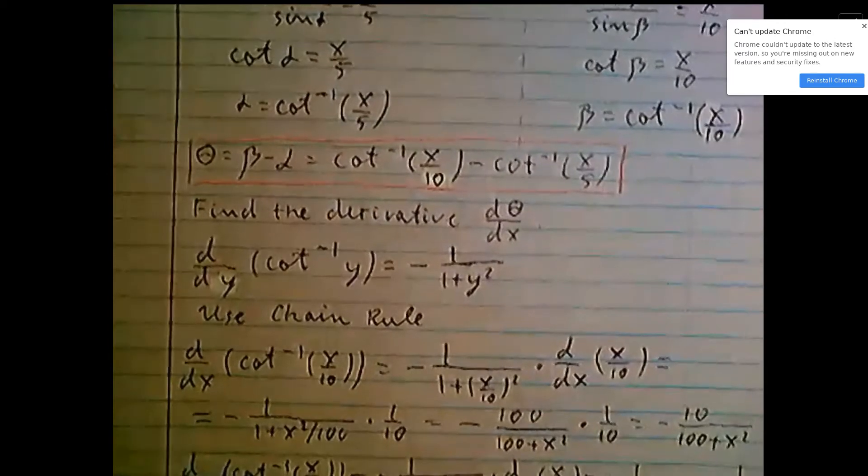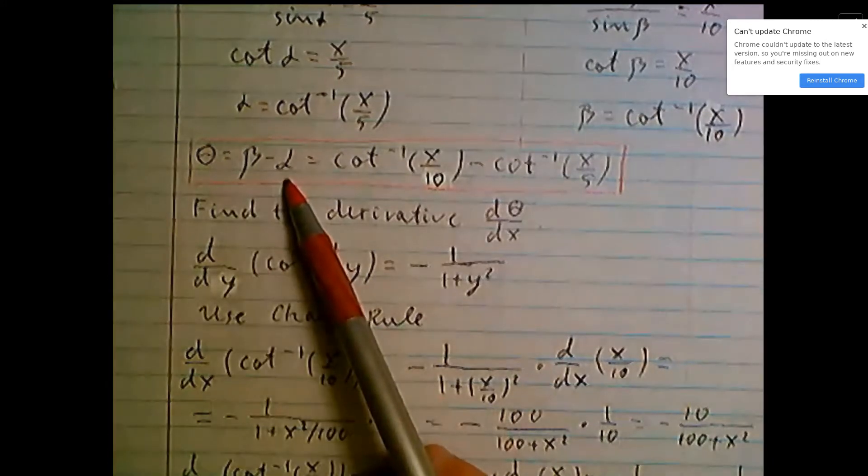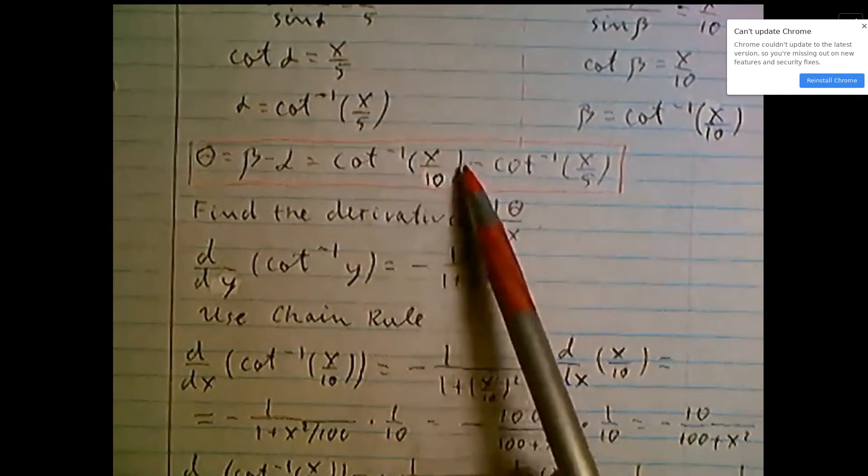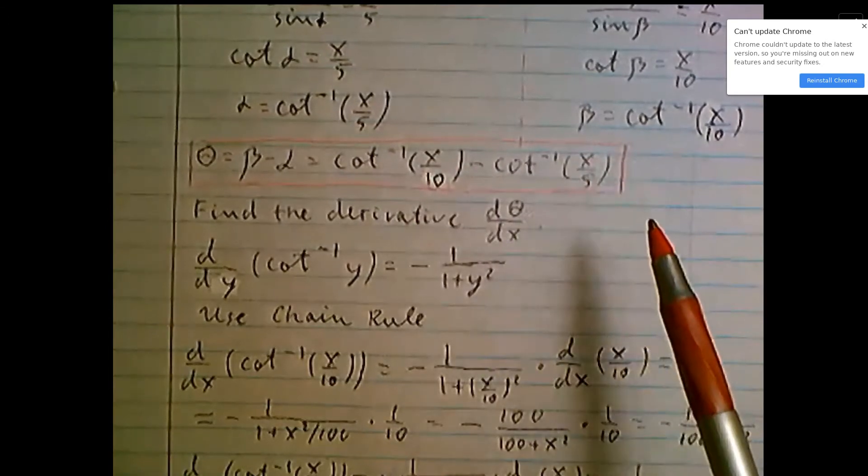We find expression for angle theta. Theta equals beta minus alpha: inverse cotangent of x over 10 minus inverse cotangent of x over 5.